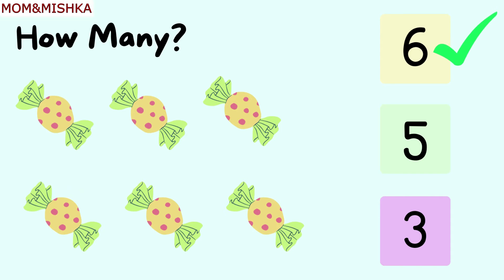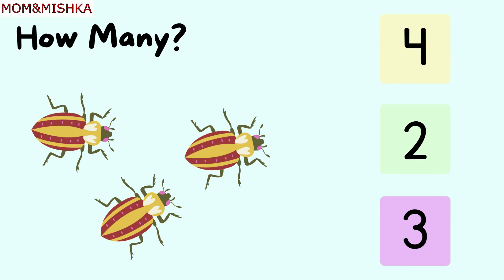There are six toffees. How many insects? One, two, three. There are three insects. Next.